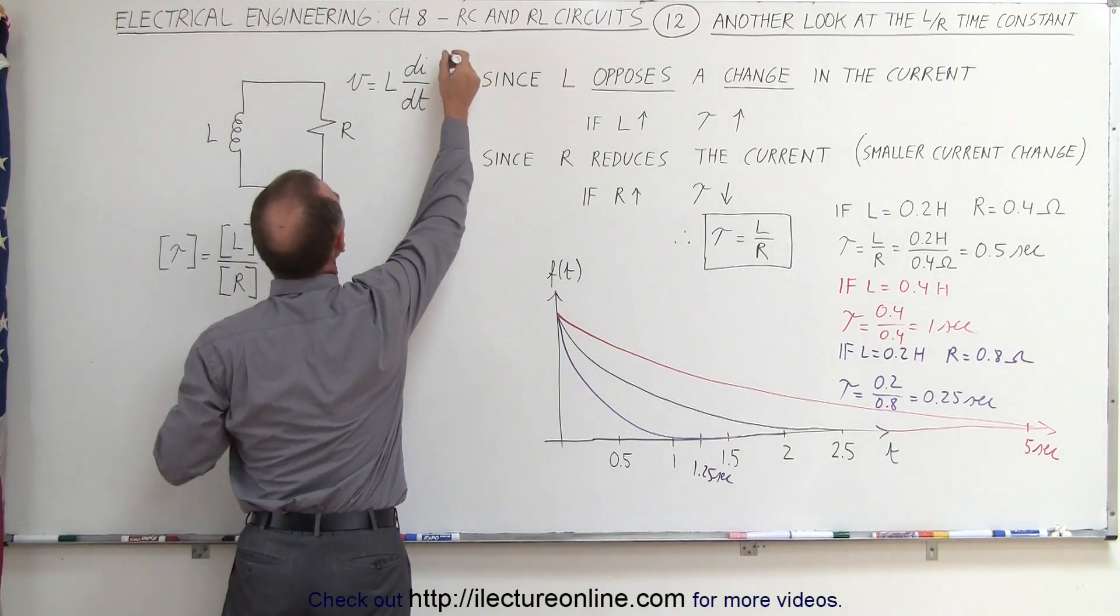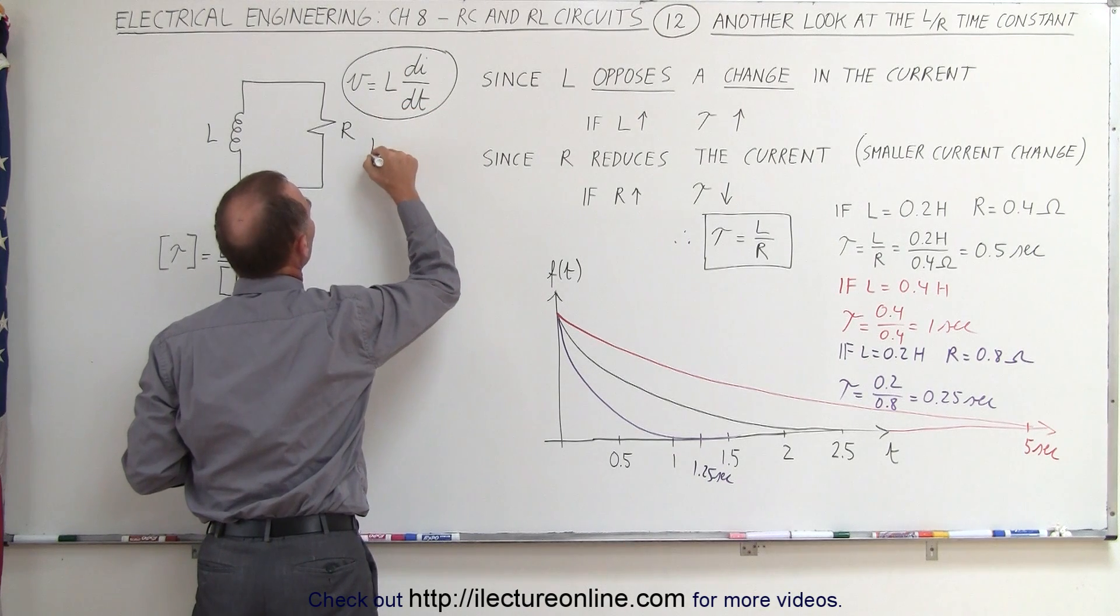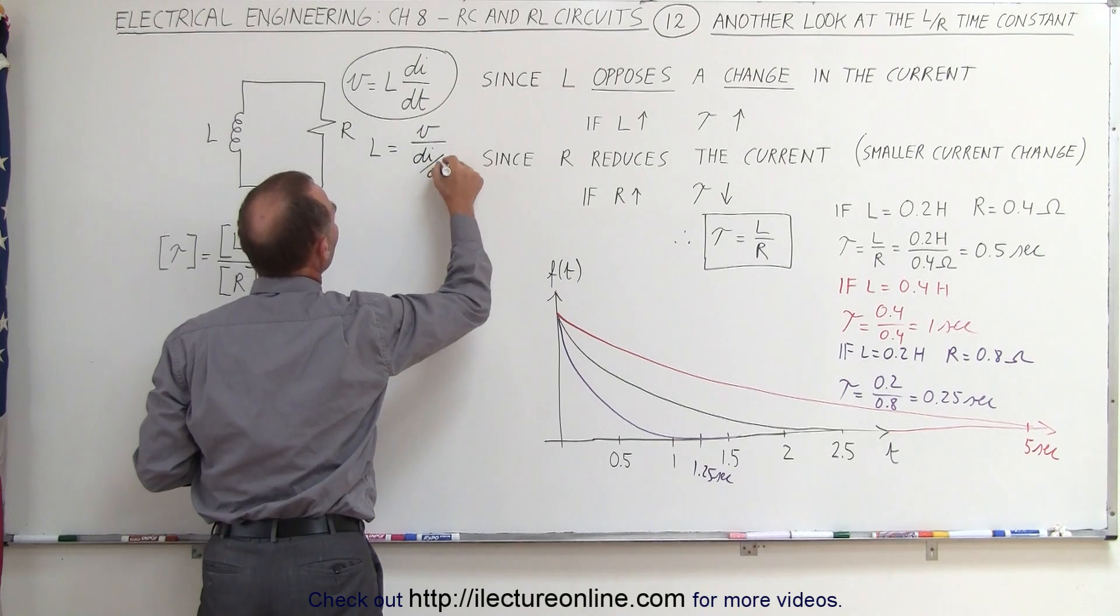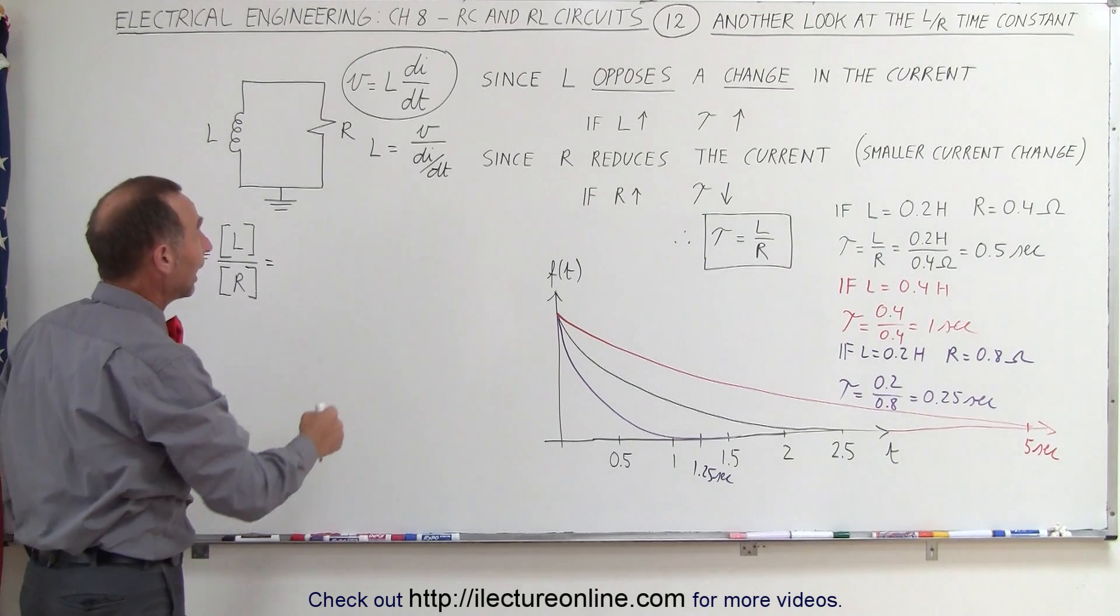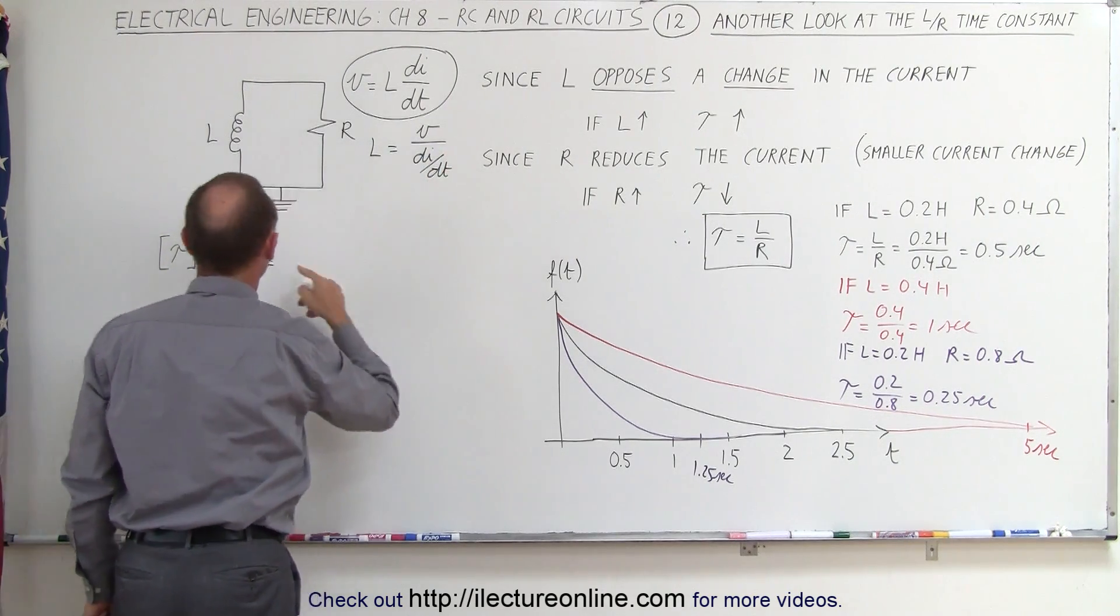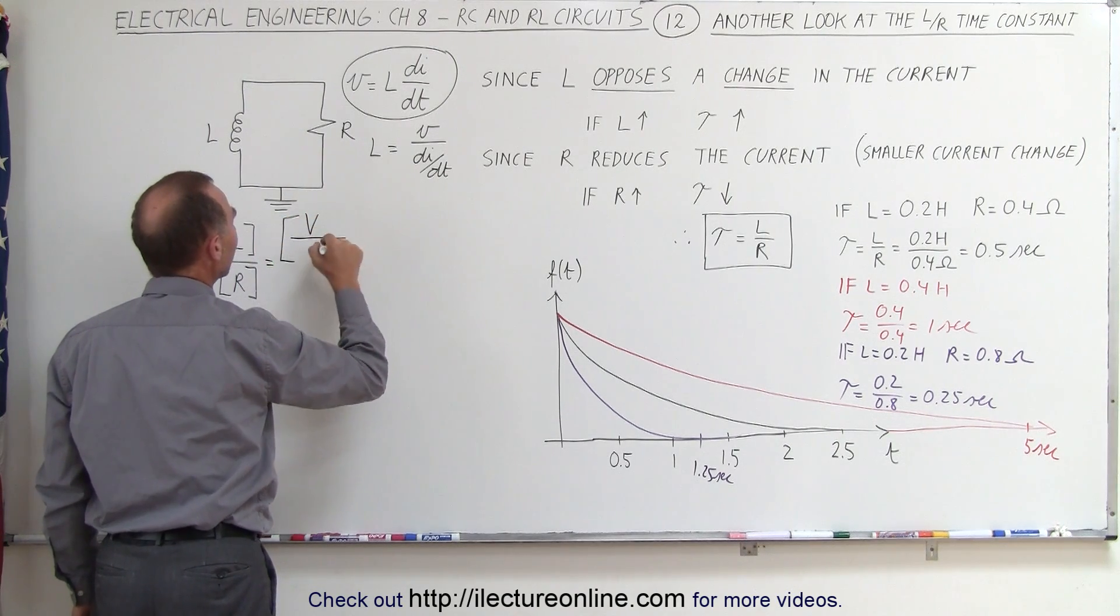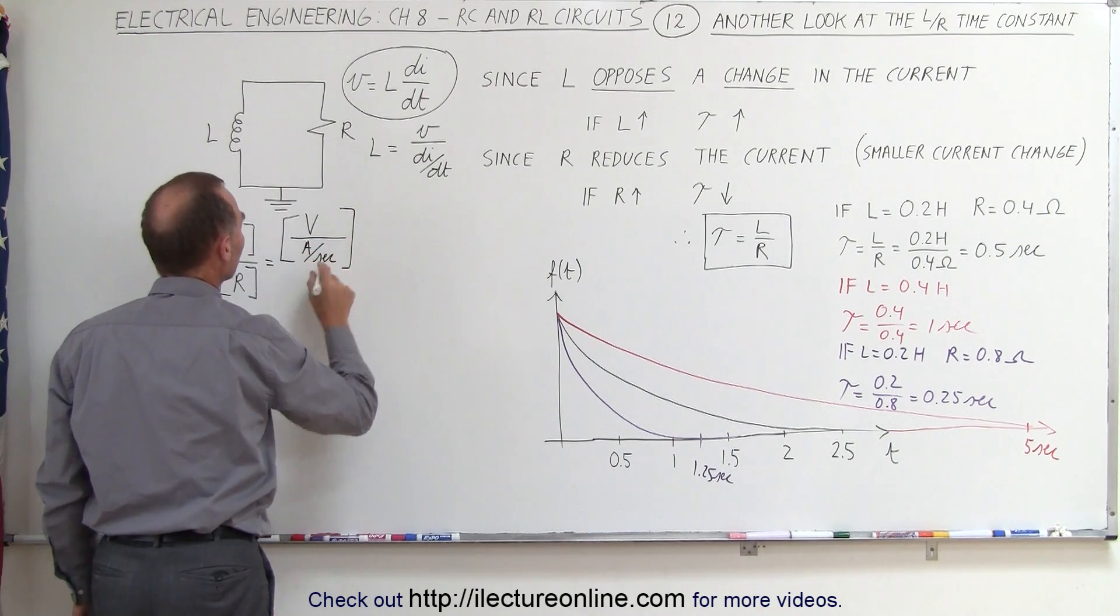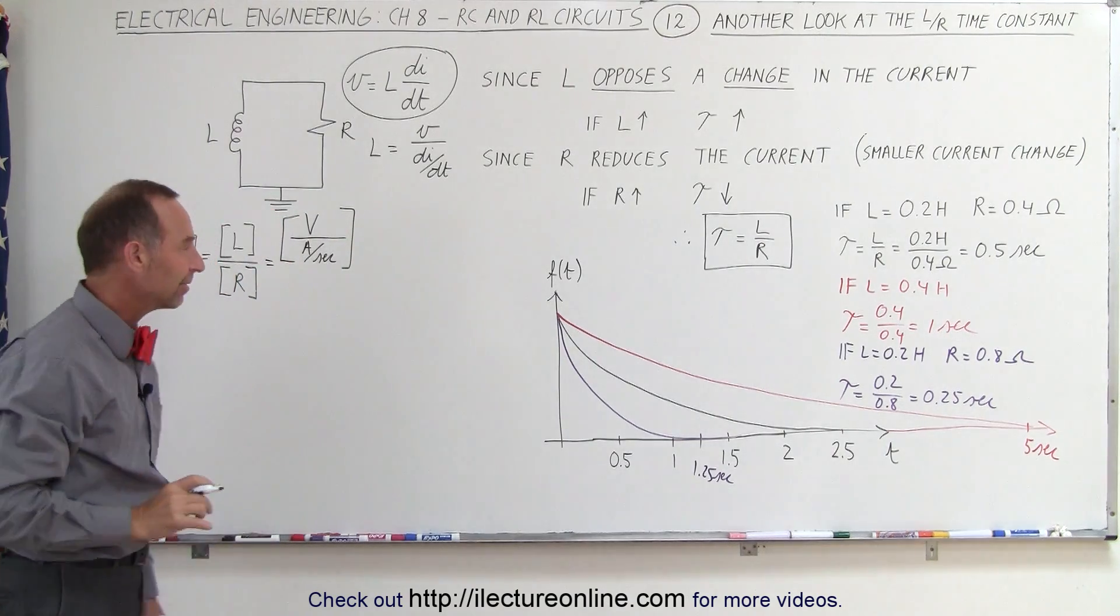Going back to the standard definition of the voltage across an inductor, we can then say that the inductance is equal to the ratio of the voltage divided by the change in the current over time. Now the units of voltage, of course, is volts, and the change in current over time would be amps divided by time or seconds. So for the inductance, we can write volts divided by the ratio of the current, which is amps divided by time, which is seconds. So the units of inductance can be written as volts divided by the fraction, amps divided by seconds.